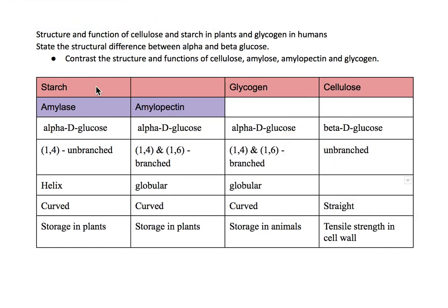First we are going to contrast the structure and function of cellulose, amylose and amylopectin — which is starch — and glycogen. We'll start with the differences between the two types of starch, which are amylose and amylopectin.